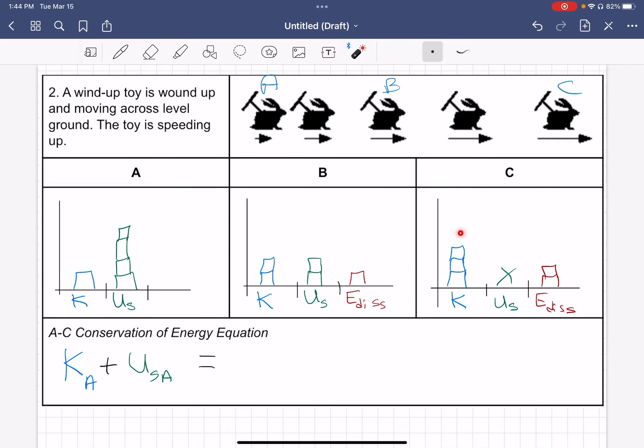I want to do the same kind of thing at C. With the way I drew my bar chart at C, I've got some kinetic energy. So I'm going to label that with a little C subscript. And then I've got some edis and I'm adding a little C to indicate it's the edis at C. And so that would be my conservation of energy equation.